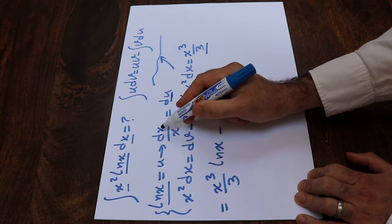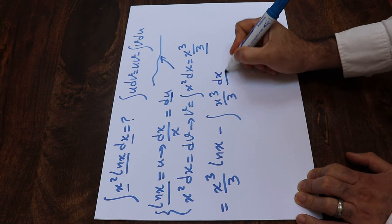And du, according to this equation, is equal to dx divided by x, so dx divided by x.